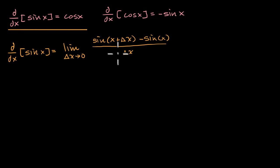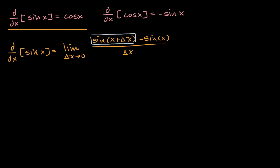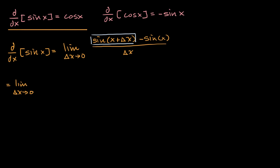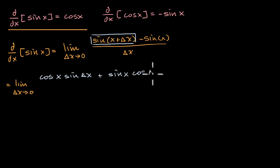So how can we evaluate this? We can rewrite sine of x plus delta x using our angle addition formulas that we learned during our trig identities. So this is going to be the same thing as the limit as delta x approaches zero. I'll rewrite this using our trig identity as cosine of x times sine of delta x plus sine of x times cosine of delta x.